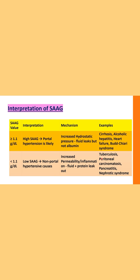Examples for low SAAG are tuberculosis, peritoneal carcinomatosis, pancreatitis, and nephrotic syndrome. So friends, this was all about serum ascitic albumin gradient or SAAG. Thanks for watching — do subscribe to my channel.